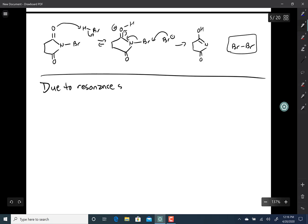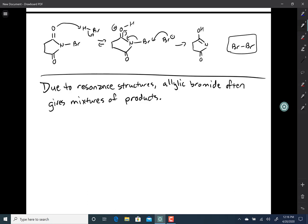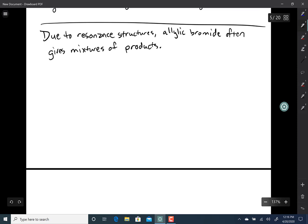Now, due to resonance structures, allylic bromination, which is adding a bromine next to an alkene, often gives mixtures of products. Benzylic bromination, where you put a bromine adjacent to an aromatic ring, is much cleaner.